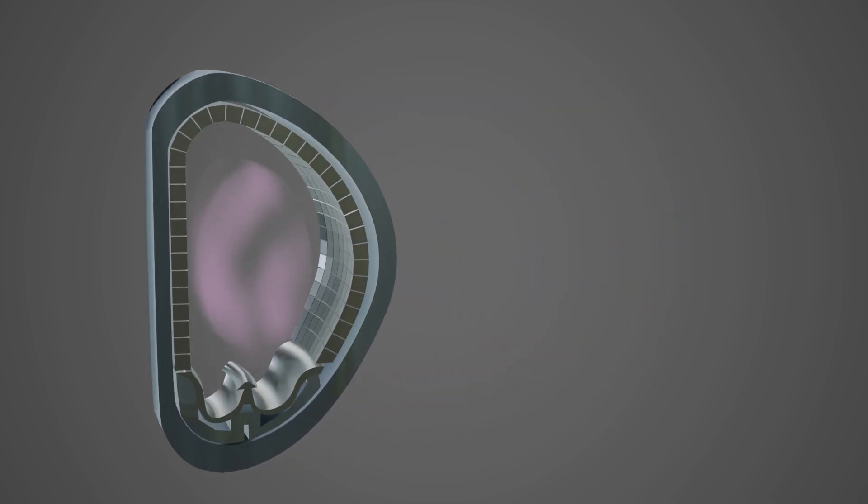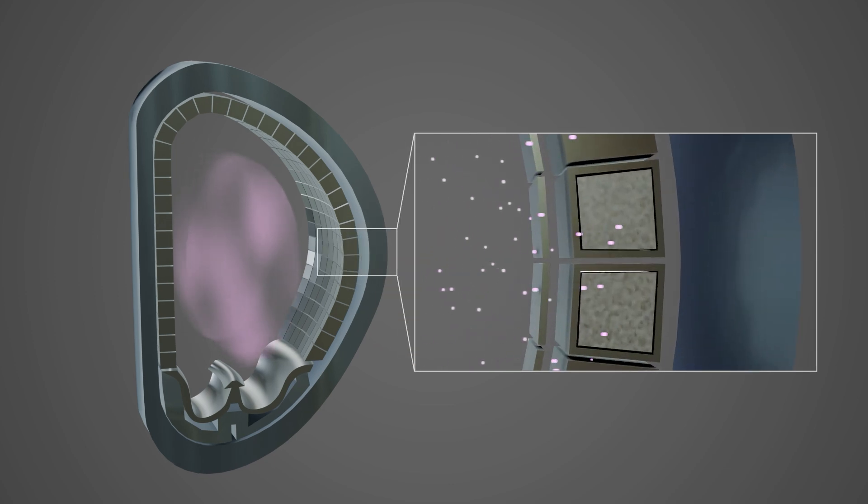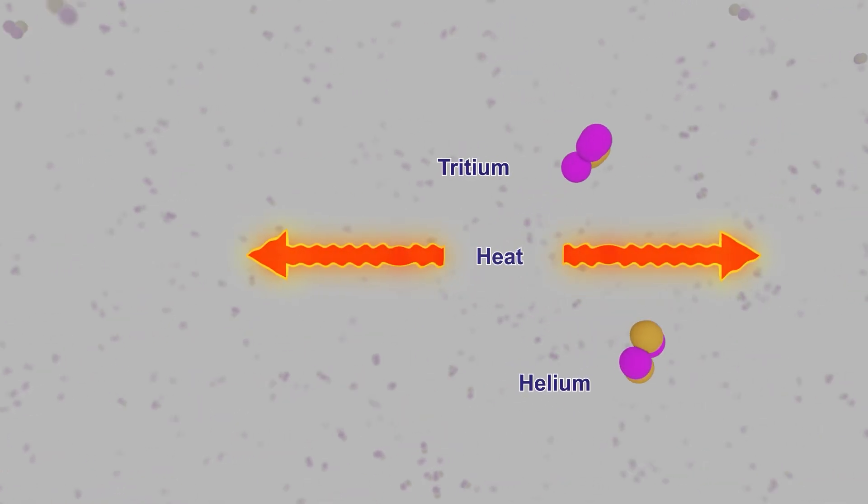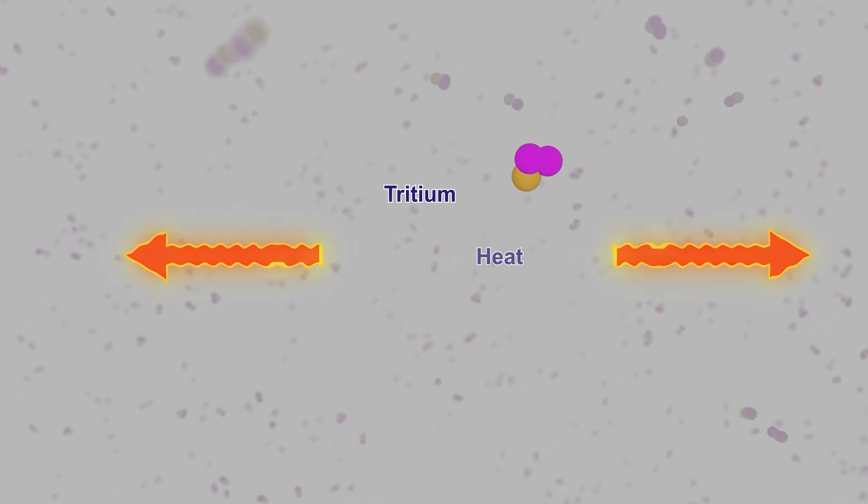The neutrons can be reacted with lithium in a breeder zone close to the first wall. Lithium is the most efficient breeder material for fusion because it reacts with the neutrons to create tritium and more heat.